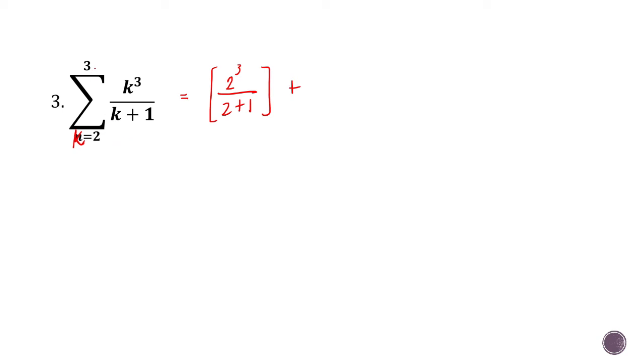Oh, so dalawa lang na terms ang pag-add natin dito. Next is 3, since 3 is the upper limit. Now, 2 raised to 3 is 8. 2 plus 1 is 3. We have here 3 raised to 3 is 27 plus 4.